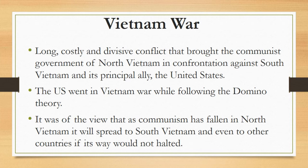More than 3 million people, including over 58,000 Americans, were killed in the Vietnam War, and more than half of the dead were Vietnamese civilians. Opposition to the war in the United States bitterly divided Americans. Even after President Richard Nixon ordered the withdrawal of US forces in 1973, communist forces ended the war by seizing control of South Vietnam in 1975, and the country was unified as the Socialist Republic of Vietnam the following year.